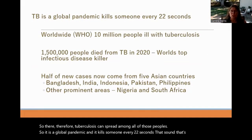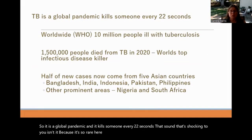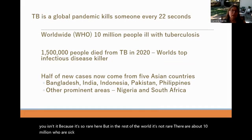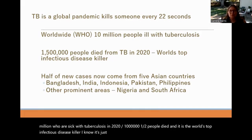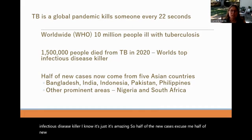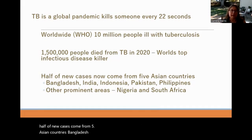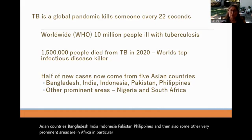There are about 10 million who are currently sick with tuberculosis, and in 2020 over a million and a half people died. It is the world's top infectious disease killer. Half of new cases come from five Asian countries: Bangladesh, India, Indonesia, Pakistan, and the Philippines. Other very prominent areas are in Africa — particularly Nigeria, South Africa, and generally the southern region of Africa. A global map shows the heaviest concentration in Africa, Pakistan, Philippines, Indonesia, and parts of Central and South America, Russia, and China.